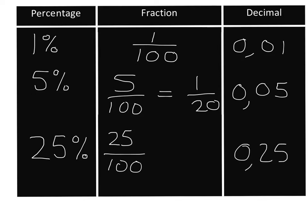25 over 100 is a fraction that isn't in simplest form, so I can simplify it by dividing the top and the bottom by 25. If I divide the top by 25 I get one, and if I divide the bottom 100 by 25 I get four. So 25 percent is the same as 25 over 100, which simplifies to one quarter, and it's the same as 0.25.